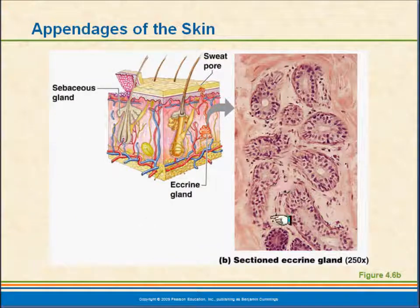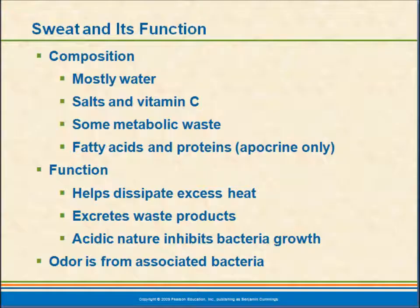This is an eccrine gland — your typical sweat gland. Eccrine sweat is made mostly of water. It does have some salts and vitamin C. Vitamin C is an acid, and the salts also function as a means of killing microorganisms. We get rid of some metabolic wastes, and there are some fatty acids and proteins in the apocrine sweat. The big function of eccrine sweat is to help dissipate excess heat, excrete waste products, and that acid nature will inhibit bacterial growth.